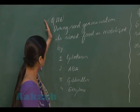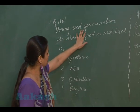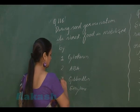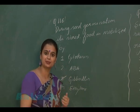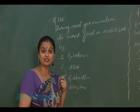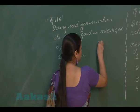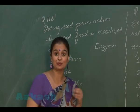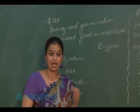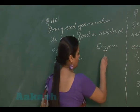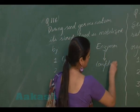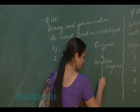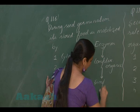In question number 116, for seed germination, we have to select which hormone is involved. The right option is gibberellic acid. Gibberellins stimulate the synthesis of hydrolytic enzymes which work on complex organic substances — they break down complex food and convert it into simpler compounds.